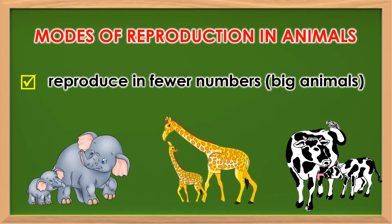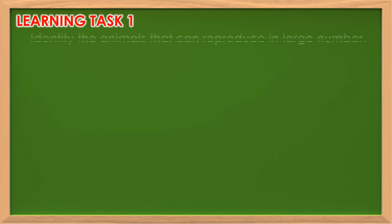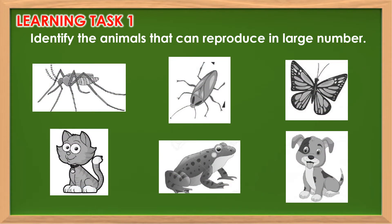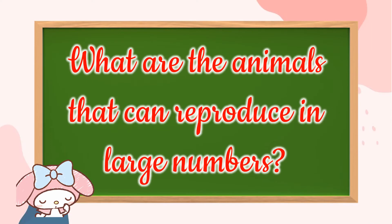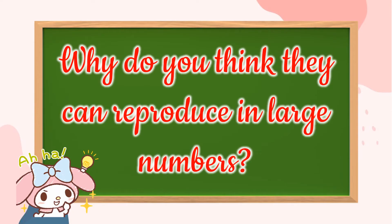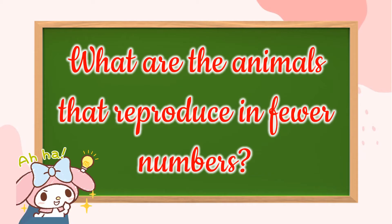Grade 5 learners, answer Learning Task 1. Identify the animals that can reproduce in large numbers. What are the animals that can reproduce in large numbers? What are the animals that reproduce in fewer numbers?